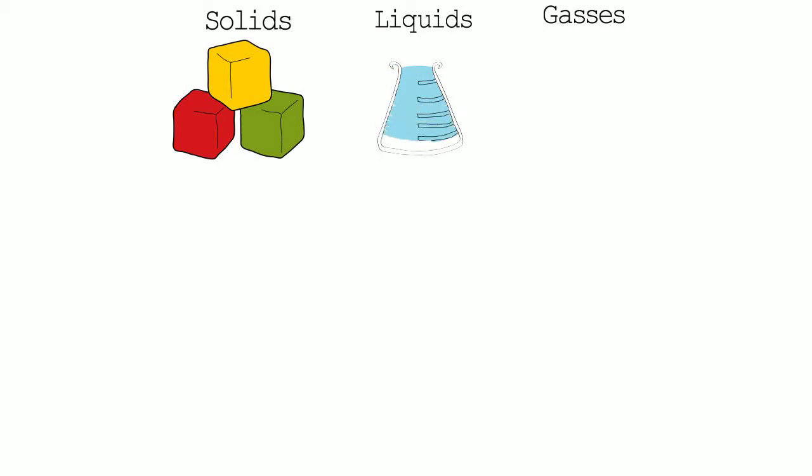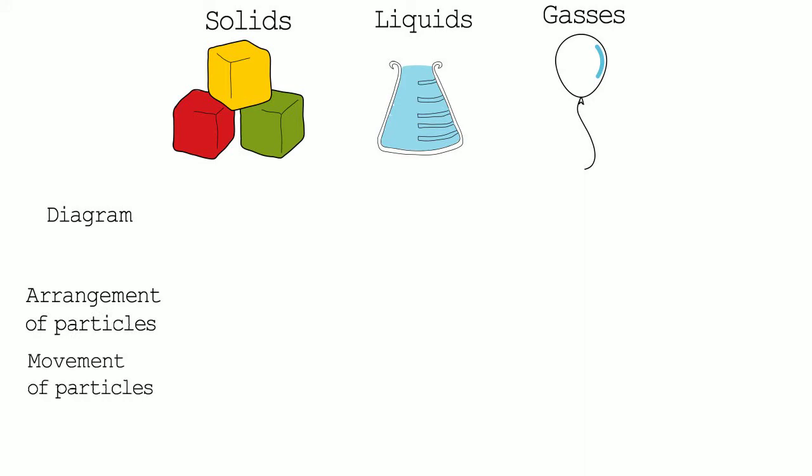There are three different states of matter. They are solids, liquids and gases. Each of these states have different characteristics and we're going to compare the characteristics between solids, liquids and gases. We're going to be looking at a diagram of how the particles are arranged. Then we're going to be looking at the arrangement of particles, the movement of particles and the energy in the particles.